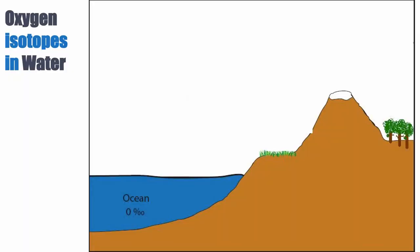In this diagram, you can see a representation of a continent and the ocean — it's absolutely not to scale. The ocean has a value of zero per mil SMOW. This is all expressed in SMOW here, even though it's not explicitly written.